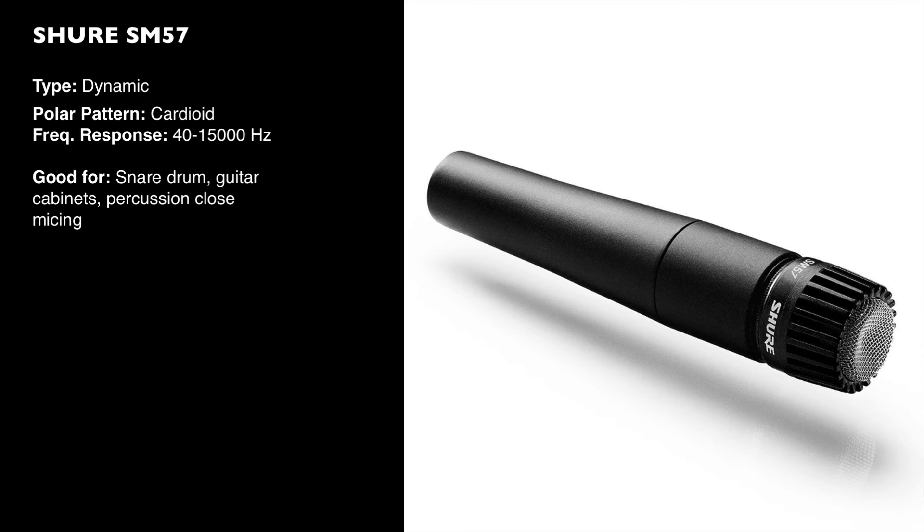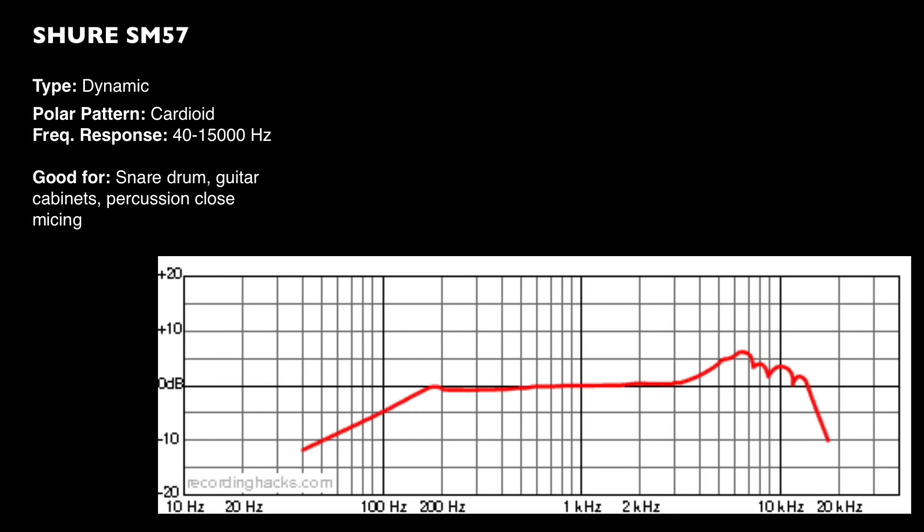The next mic we're going to look at is the Shure SM57. It's a dynamic microphone with a cardioid pickup pattern, listed from 40 hertz to 15,000 hertz or 15 kilohertz. It's often used for things like snare drums, guitar cabinets, and percussion. You can see from the frequency response curve a very prominent mid-range boost around about 5 kilohertz or so, which really sounds very pronounced on this microphone.